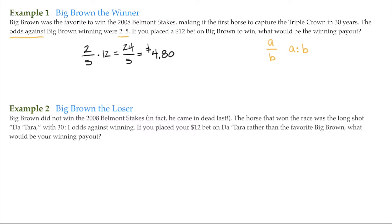Looking at the next example: Big Brown did not win the 2008 Belmont Stakes. As a matter of fact, this horse, which was the favorite to win, actually came in dead last. The horse that won the race was the long shot, Datara, with 30 to 1 odds against. If you placed your $12 bet on Datara rather than the favorite Big Brown, what would be your winning payout?